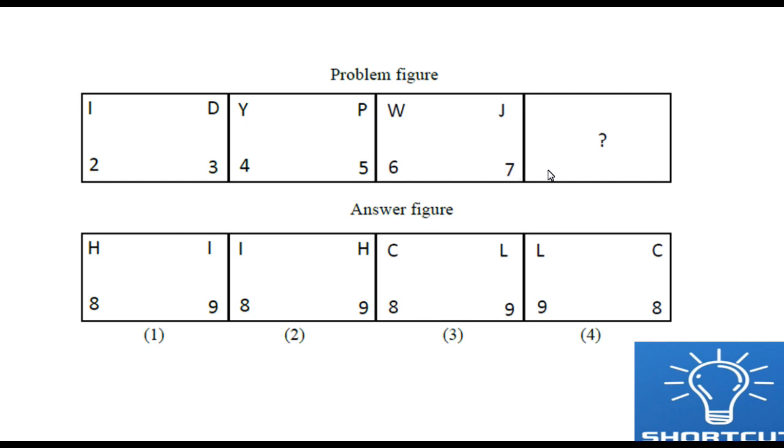Just you would have got idea: 8, 9 should come. So this is also 8, 9. This is also 8, 9. This is also 8, 9. Surely fourth option is wrong because fourth option they have given 9, 8.